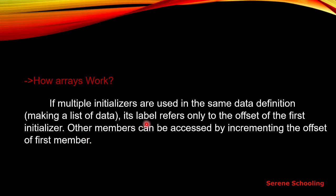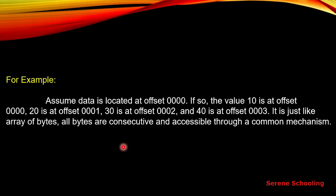We must know what is meant by label and what is meant by offset. The offset is the address, and the label is basically the name of the array. For example, assume our data is located at some address — the first element of our array is at that location. The value 10 is at the first offset, 20 is at the next address, 30 at the next, 40 at the next. This shows that arrays are stored in consecutive locations, just like an array of bytes. It works just like any high-level language.